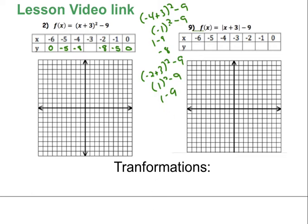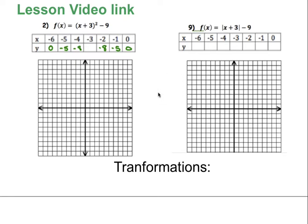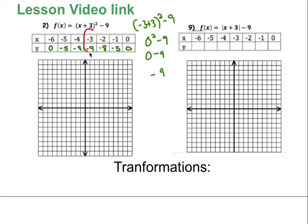Then the last one is negative 3: negative 3 plus 3 squared minus 9 → 0 squared minus 9 → 0 minus 9 is negative 9. If I look at that pattern, which we looked at in the day 1 unit, that right there is my vertex.